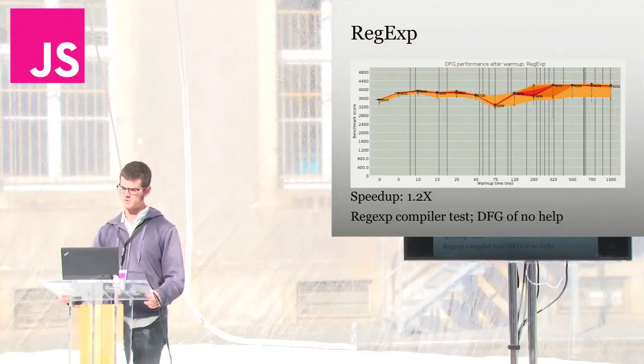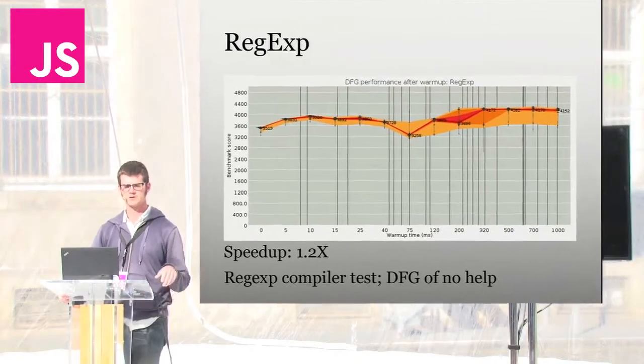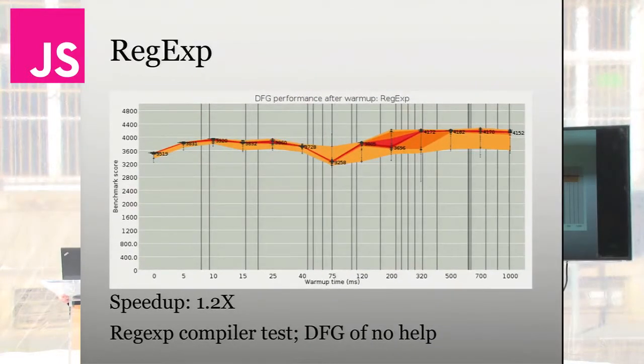Next, we've got the regular expression benchmark. And there's not really anything to say here because the regular expressions have their own compiler in all the engines. And it's not really subject to the optimizing compiler. And so the DFG doesn't really do anything for us here. And that's basically that. It seems to run, but very few times, maybe 15 times or so, giving us a speed up in the loops around which the regular expressions run, but not in the regular expressions themselves, which take the bulk of the time.